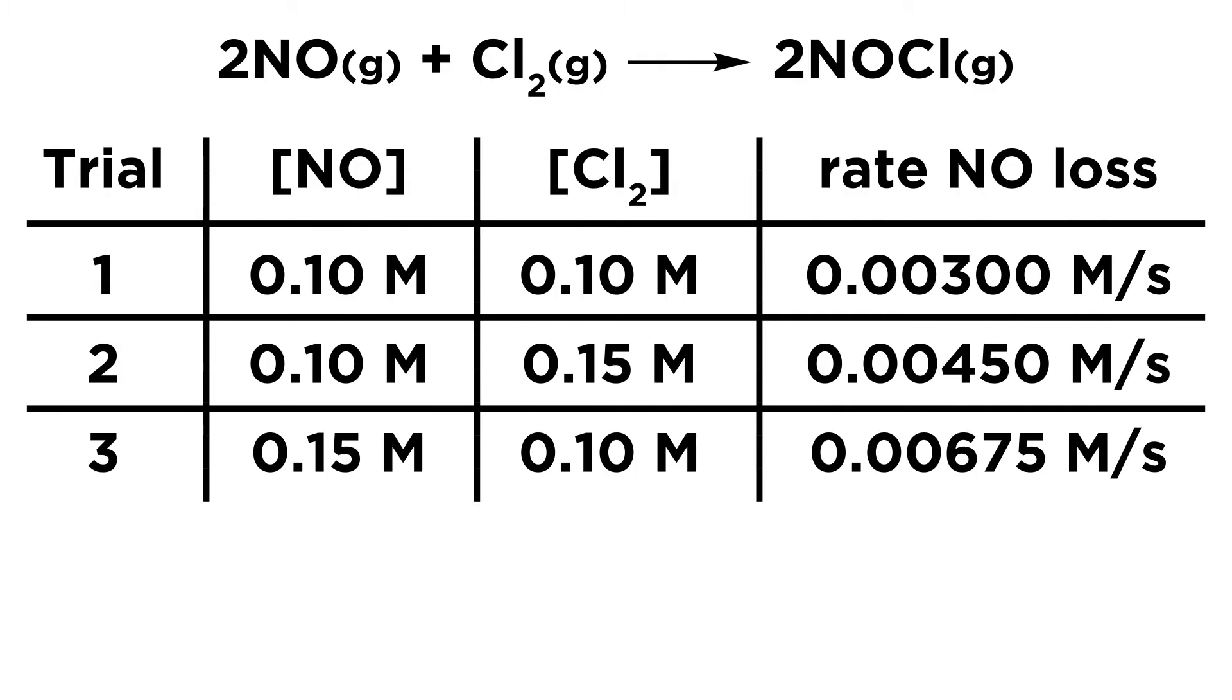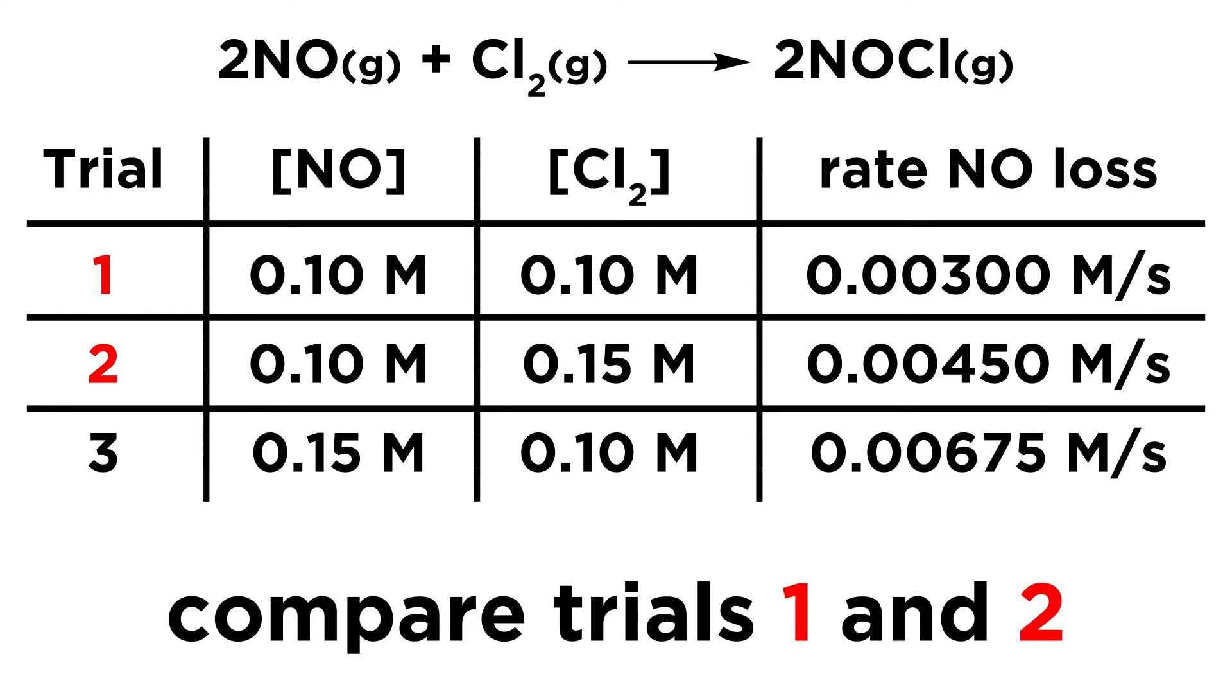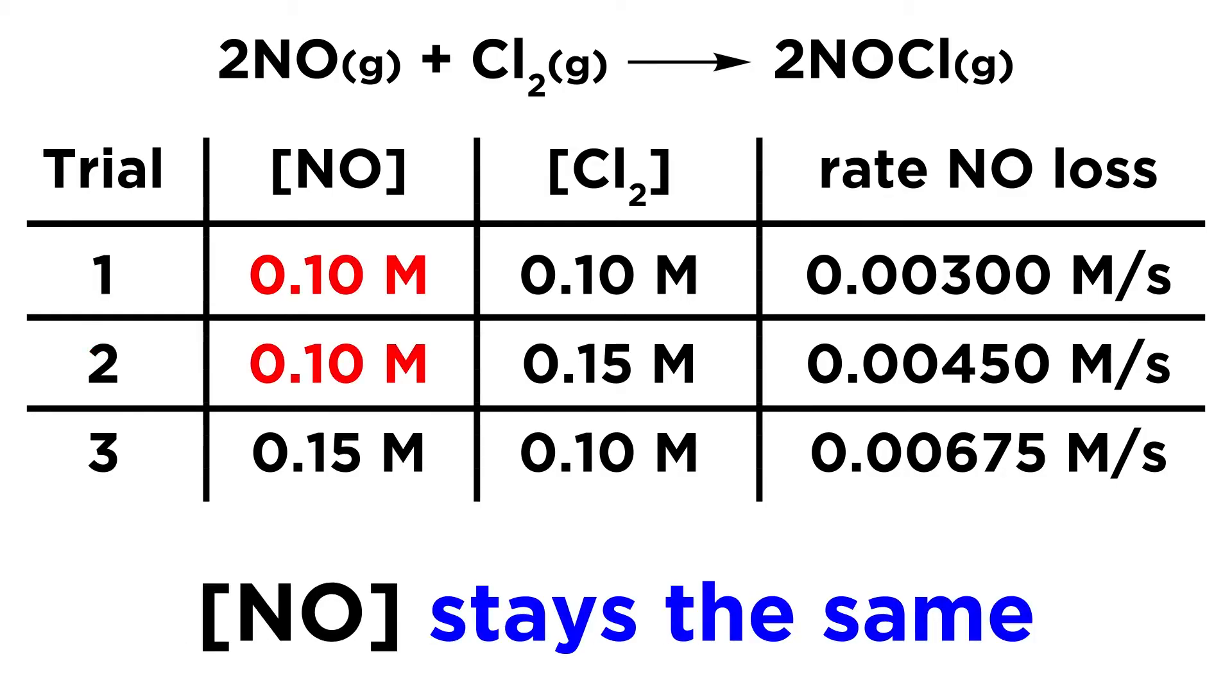Okay, so we're going to put this reaction at the top and then here is all of our initial rates data. Now, in order to find the rate law, we're going to have to compare two different trials and see how the data changes in terms of concentration and rate. So the first thing we want to do is compare trials 1 and 2. Now, we first notice that the concentration of NO stays the same, 0.1 molar and then 0.1 molar.